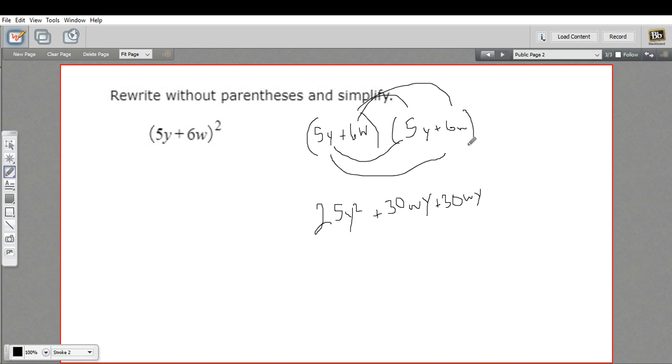And the outside terms, 6w times 6w, 6 times 6 is 36. And w times w is w squared.